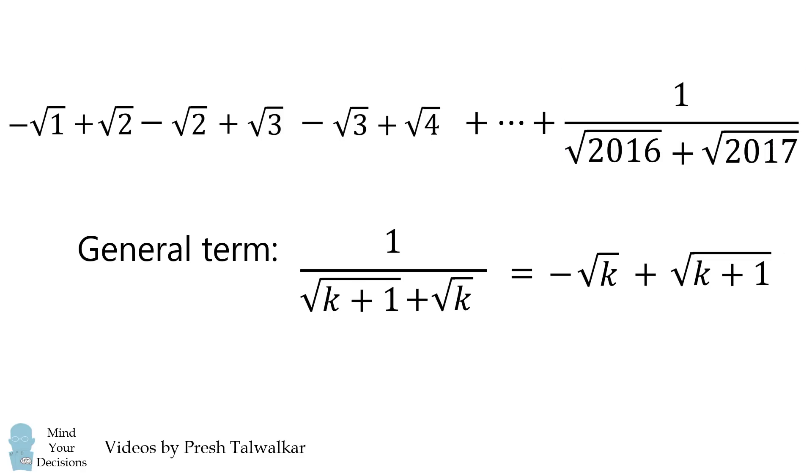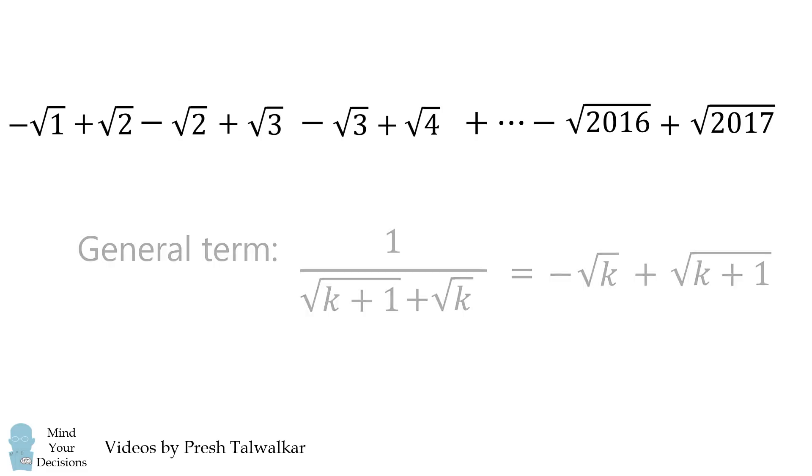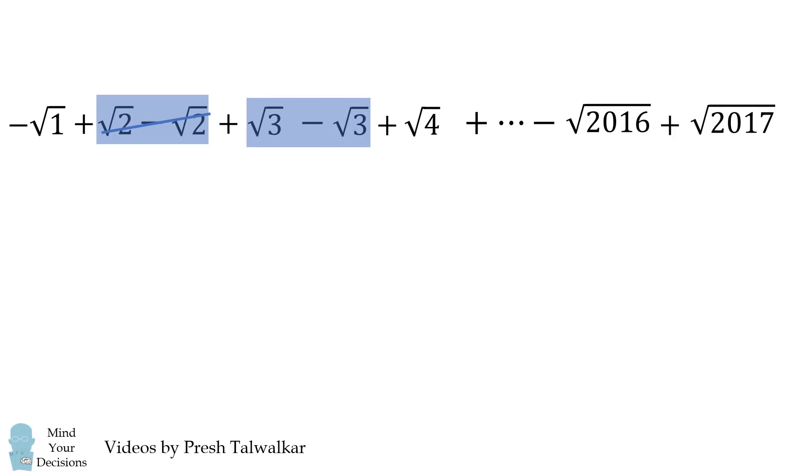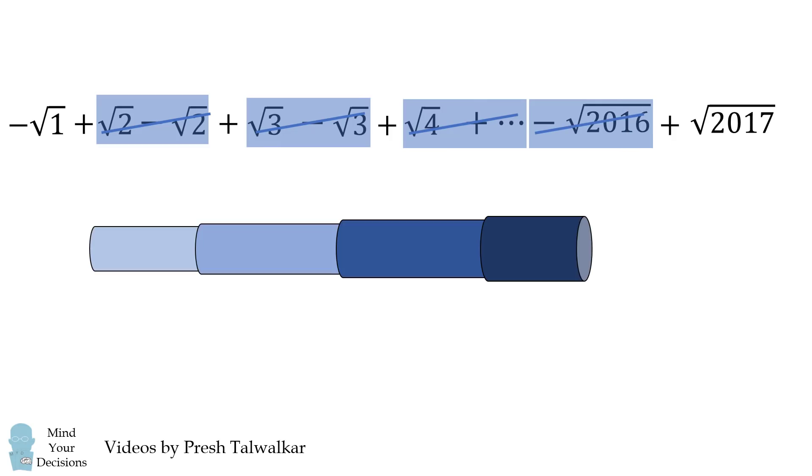What's the point of all this? Well, we're going to get a magical simplification. Notice this square root of 2 minus square root of 2 will cancel out. Then the square root of 3 minus square root of 3 will cancel out and so on. And each of these terms will cancel out. The pattern is reminiscent of a telescope and thus this is known as a telescoping series.